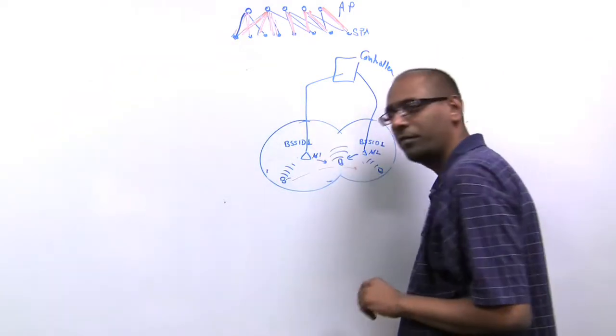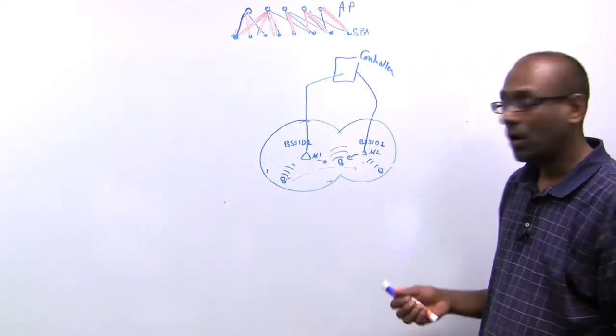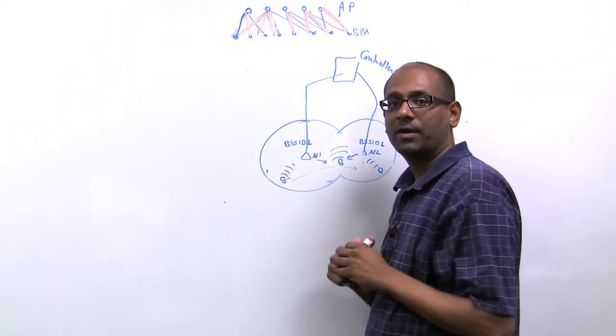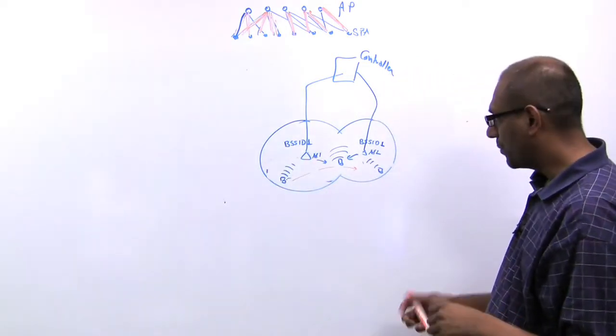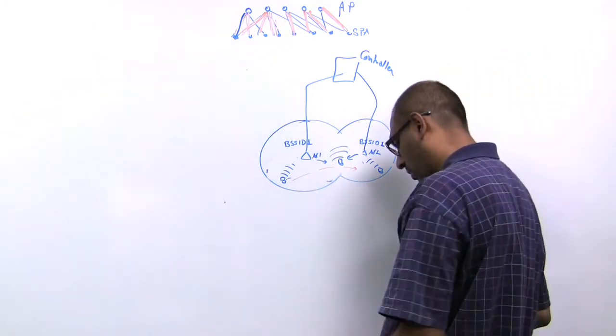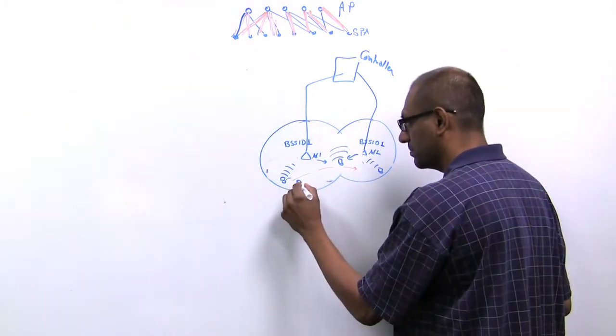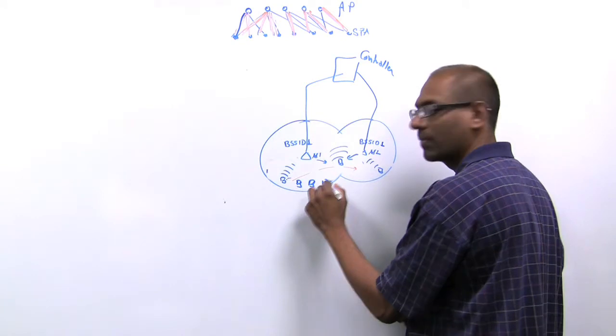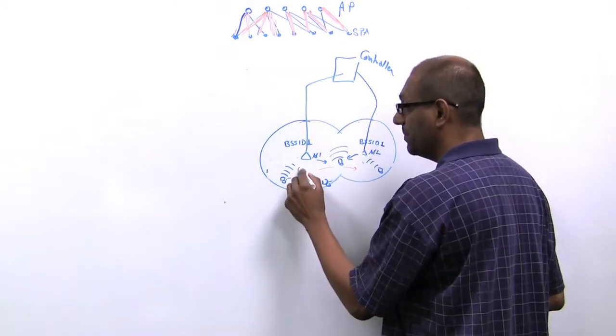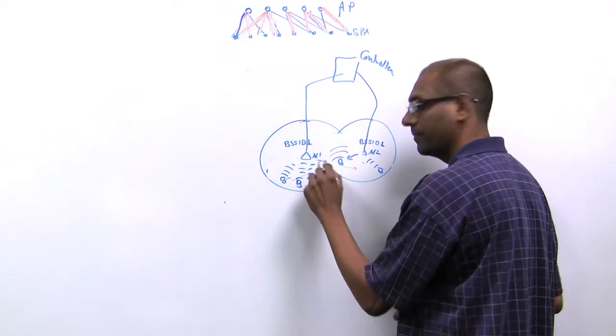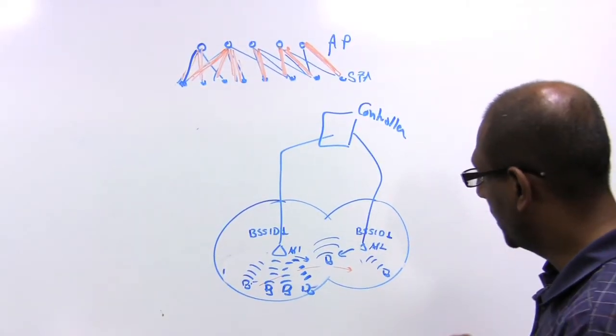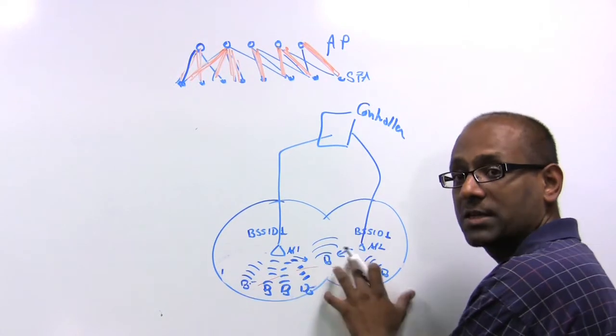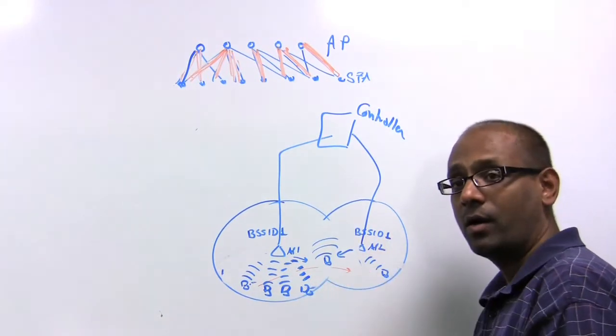So this is the basic idea of what we call virtual cell. All the access points advertise the same BSSID. Now notice that whether you have one client or multiple clients, they all connect to the same BSSID.